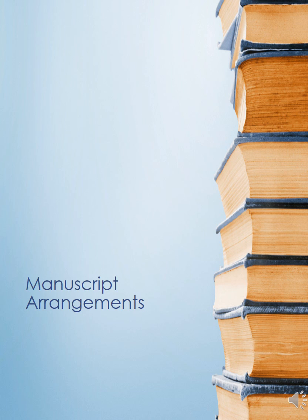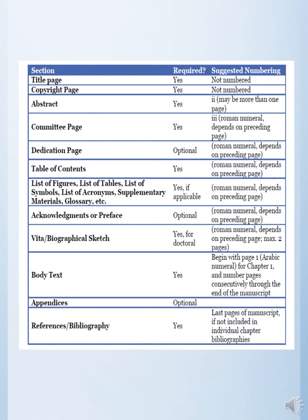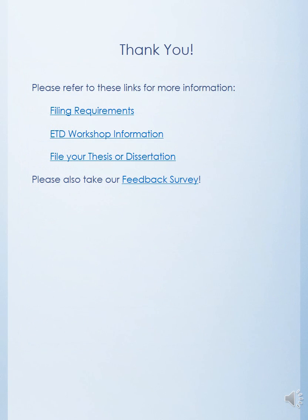The preliminary pages in this presentation are where we in Academic Services see the most errors. There are, however, more sections you must include in the preliminary pages and your manuscript as a whole. For a complete list of manuscript sections and the order of each section, please look at this table. As you are finalizing your ETD submission, please refer to the sample pages previously shown and the ETD formatting guide as a whole. Thank you for watching this presentation. Please let us know how we are doing by taking this quick survey and use the following links for a full formatting guide and the filing deadlines. If you have any questions, please email us at academicservices@grad.ucla.edu or give us a call at 310-825-3819.